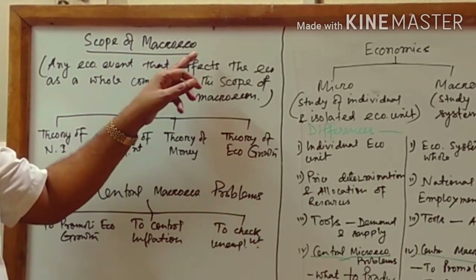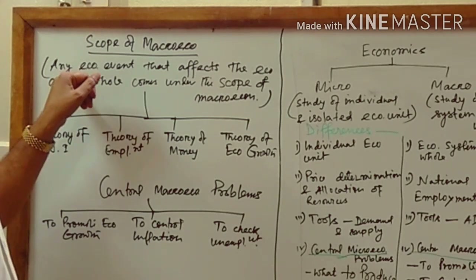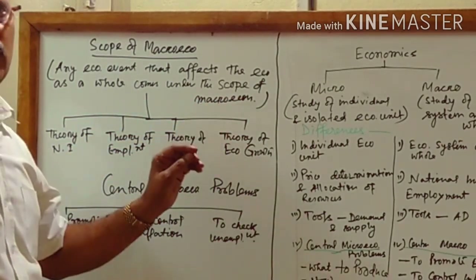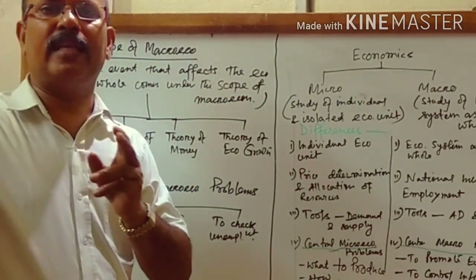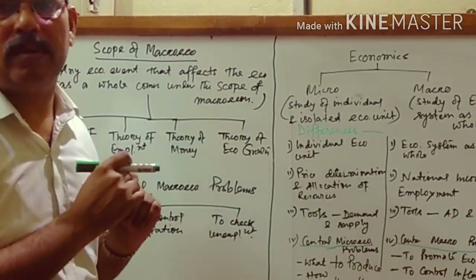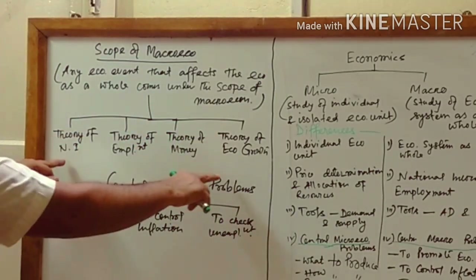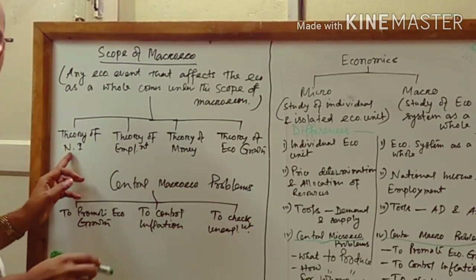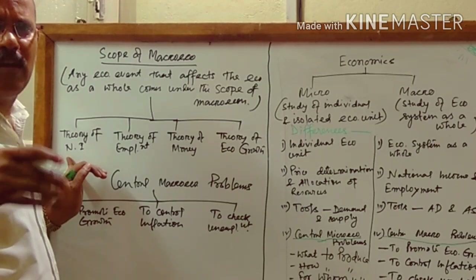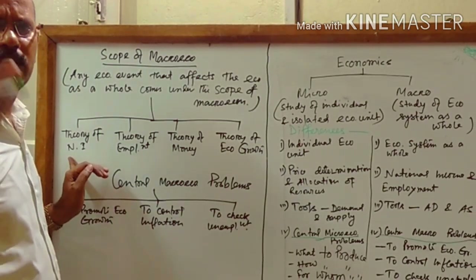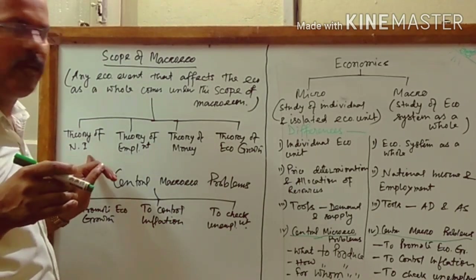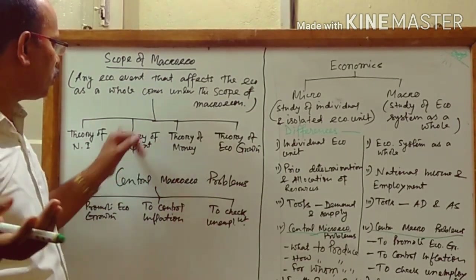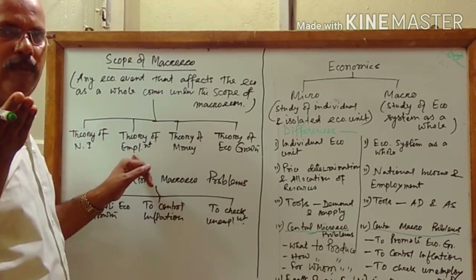Next, the scope of macroeconomics. Any economic event that affects the economy as a whole comes under the scope of macroeconomics. There are four categories. First is the theory of national income — all theories related to estimation and promotion of national income. Second is the theory of employment — different theories such as the classical theory of employment and the Keynesian theory of employment, and how to generate employment in the economy.